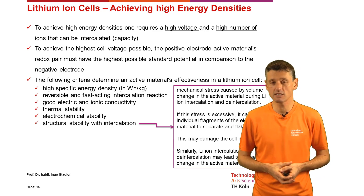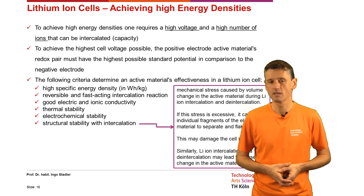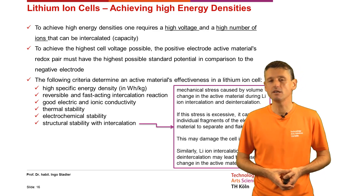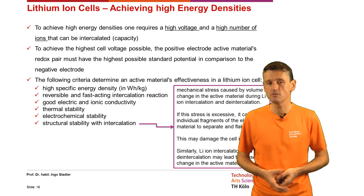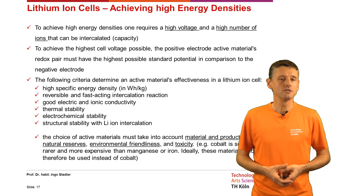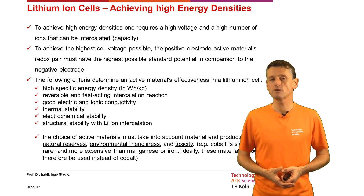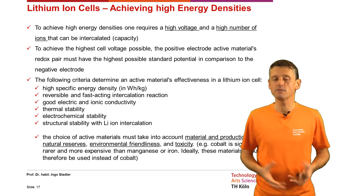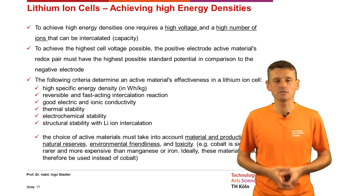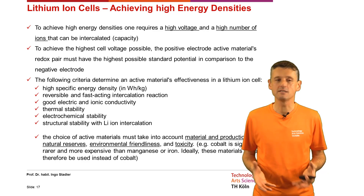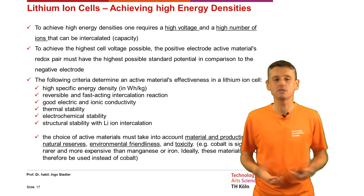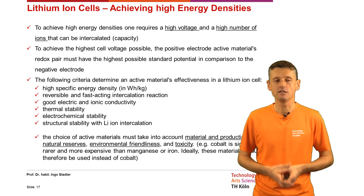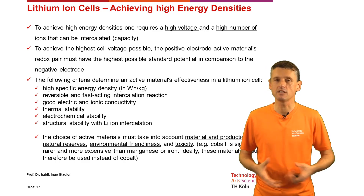Similarly, lithium ion intercalation and de-intercalation may lead to phase changes in the active material. The choice of active materials must also take into account material and production costs, natural reserves, environmental friendliness, and toxicity. For example, cobalt is significantly rarer and more expensive than manganese or iron, so ideally those materials should be used instead of cobalt.